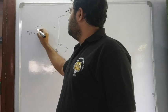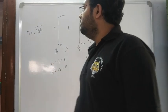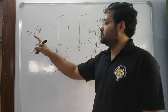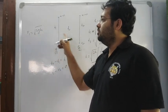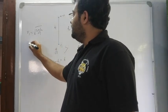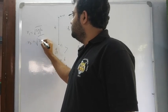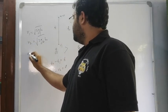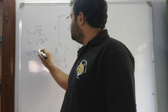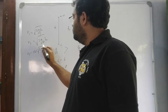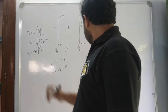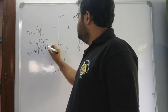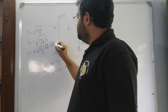V1 becomes root over 2 g1 h, because v squared equals u squared plus 2gs, with u equal to 0. So v squared equals 2gi, giving v equal to root over 2gh. Similarly v2 equals root over 2 g2 h. Then v1 minus v2 equals root over 2h times root g1 minus root g2.